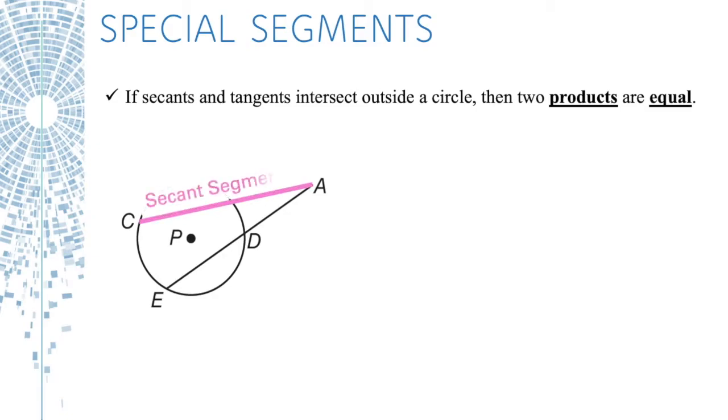AC, this is called a secant segment. AD is called an external secant segment. So there's the whole thing that's the secant segment, and then just the outside of a secant segment is called the external secant segment. So with that in mind,